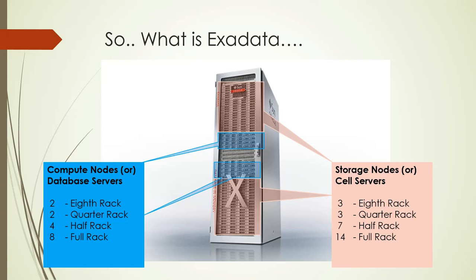There are usually two types of storage layer configurations: extreme flash and high capacity. Extreme flash contains only flash drives, which provides better performance with less capacity. High capacity includes physical hard disks with a few flash drives, providing more storage space for the database. Quarter and eighth rack come with two database nodes and three storage nodes. Half rack comes with four database nodes and seven storage nodes. Full rack comes with eight database nodes and 14 storage nodes.